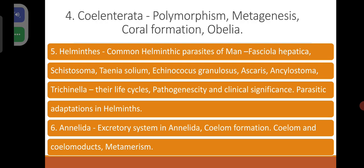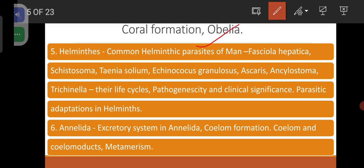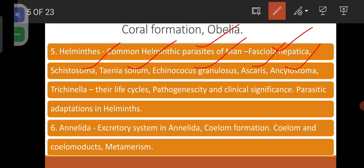Coral formation and type study of Obelia. Coming to helminths, it includes common helminthic parasites of man: Fasciola hepatica, Schistosoma, Taenia solium, Echinococcus granulosus, Ascaris lumbricoides, Ankylostoma duodenale, Trichinella and their life cycles. Pathogenicity and clinical significance. Parasitic adaptations in helminths. You have to understand the type study, pathogenicity, and treatment, and try to understand the life cycle in the form of a flow chart or cycle.